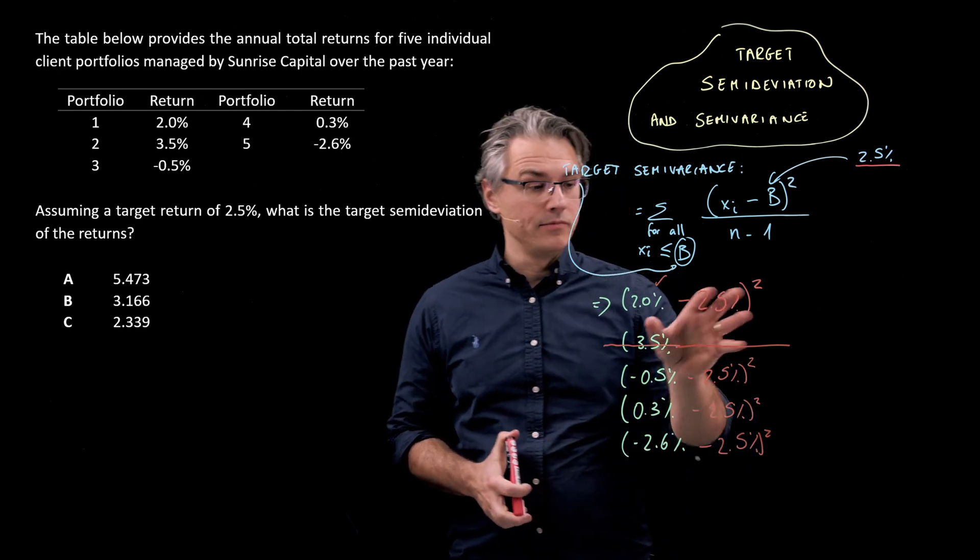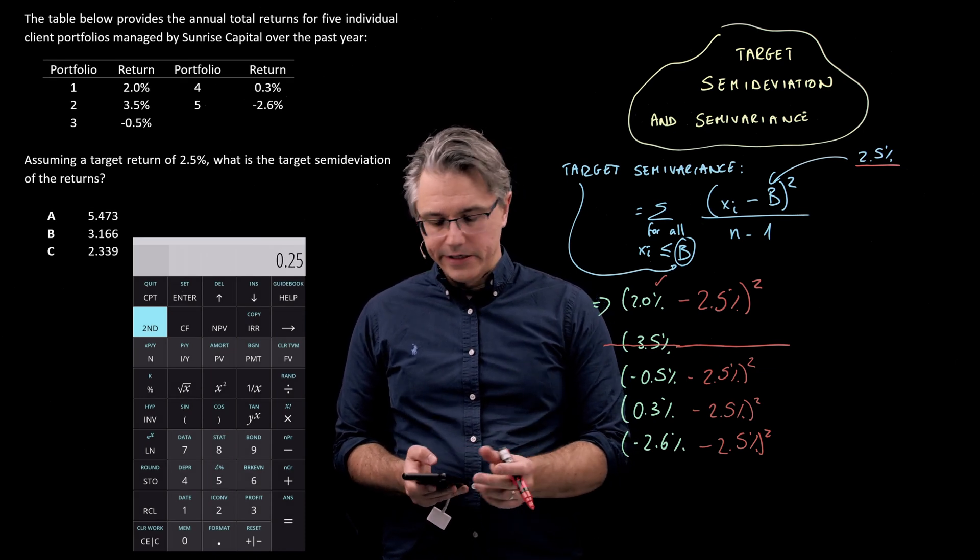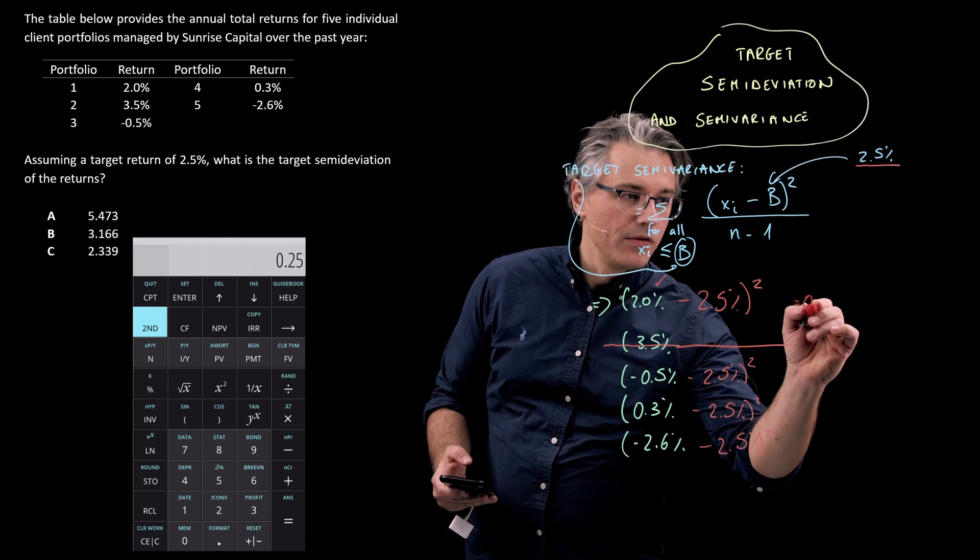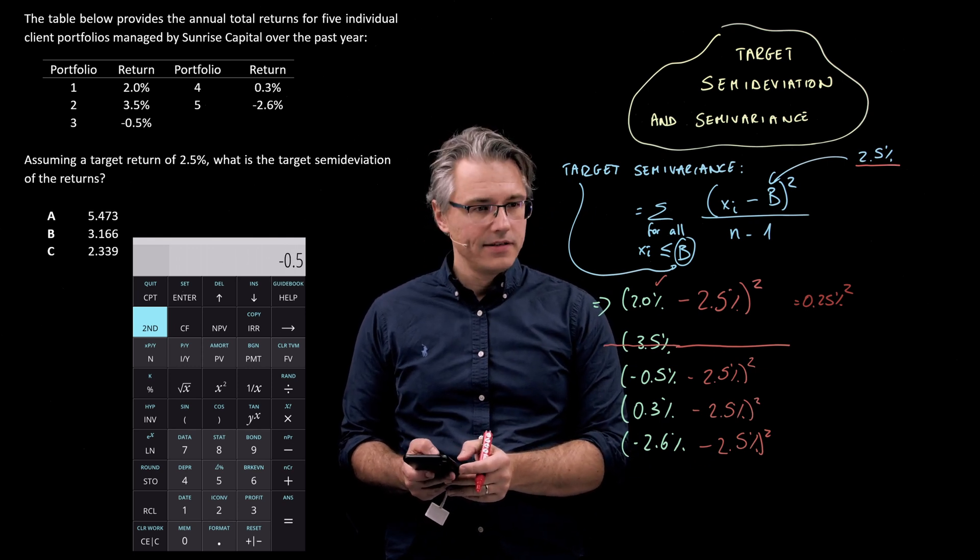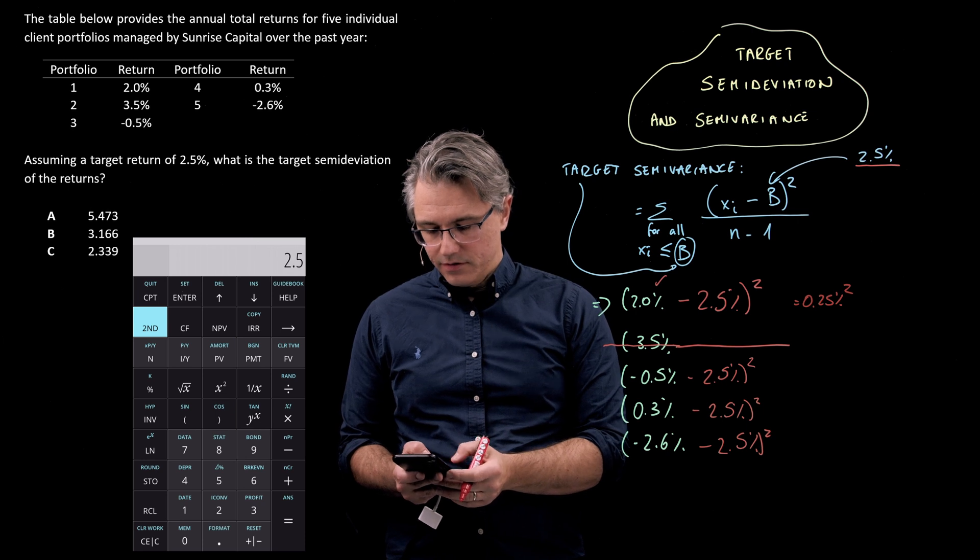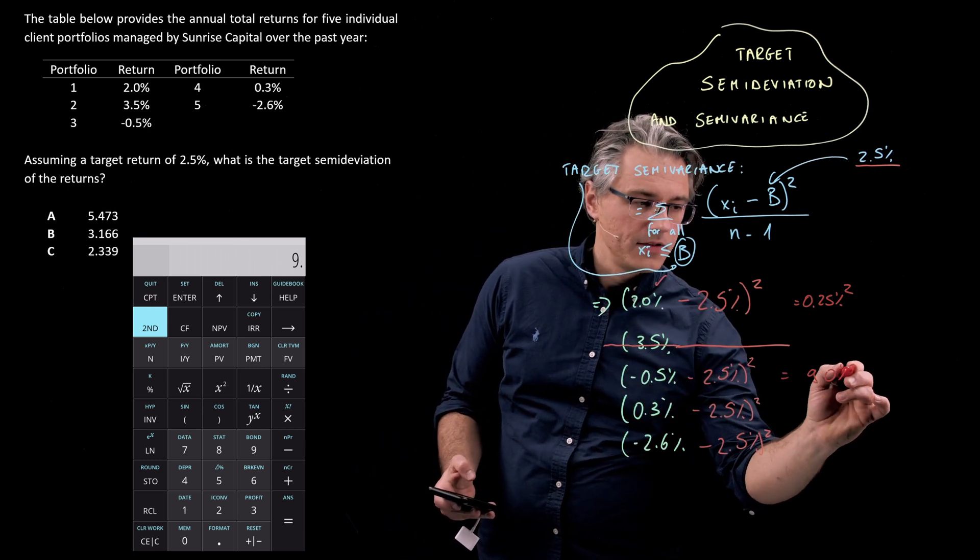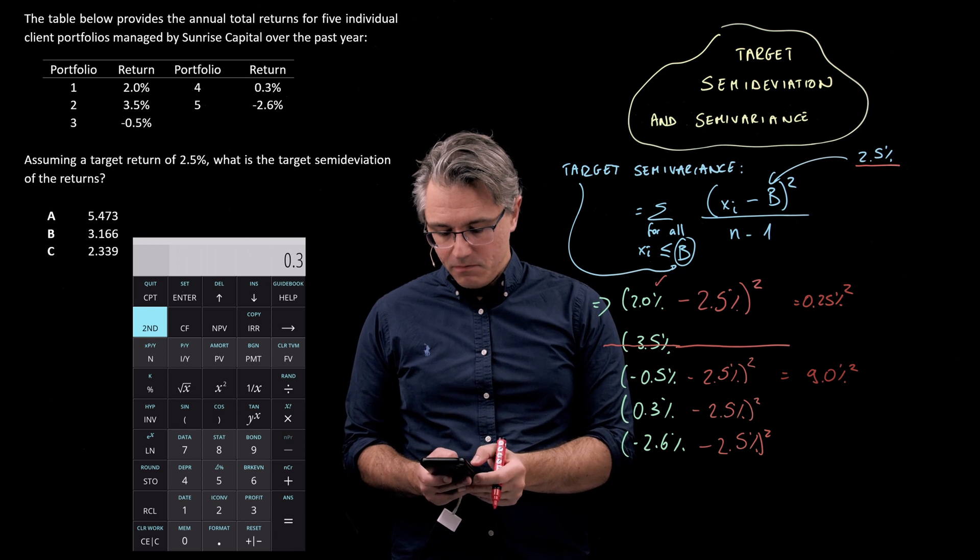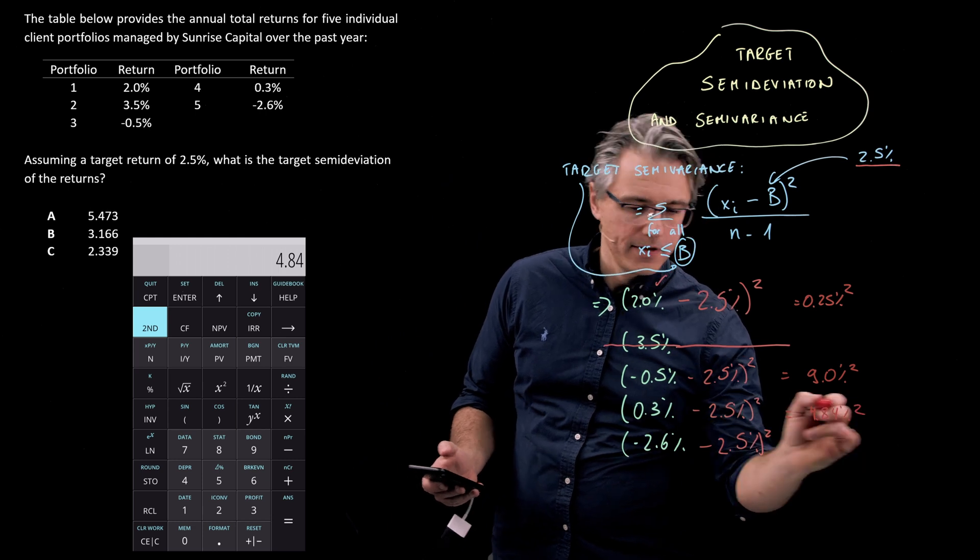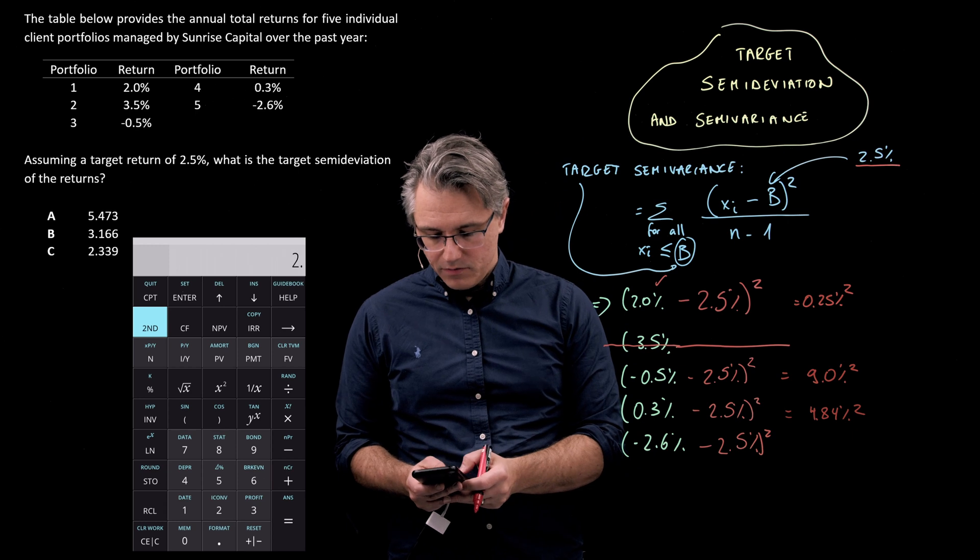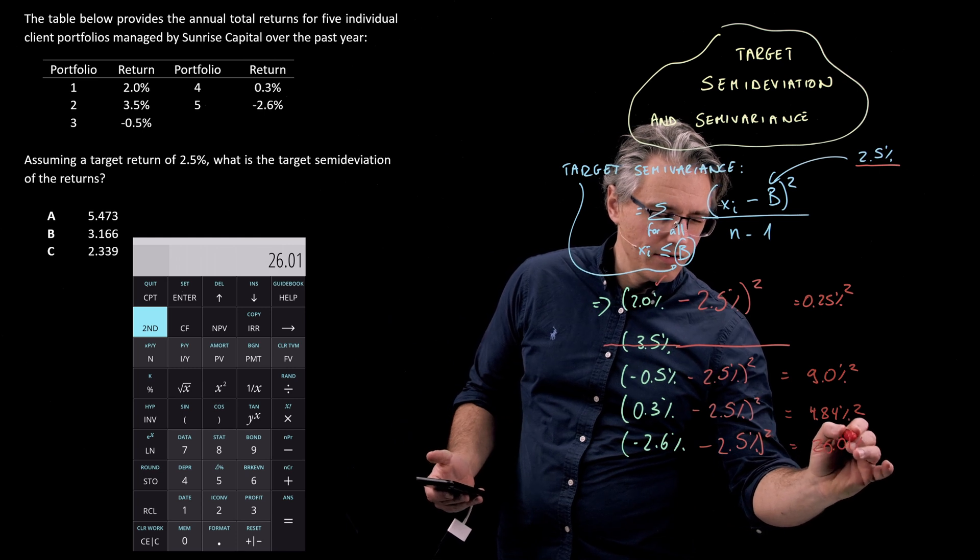Let's take the calculator and compute these deviations squared. 2 minus 2.5 squared. This is 0.25% squared. Now we ignored this one, so the next one is minus 0.5 minus 2.5. That's going to be 3. If we square this one, it will give 9, that's obviously percent squared. 0.3 minus 2.5, square this, 4.84% squared, and then minus 2.6 minus 2.5, square this. 26.01% squared.